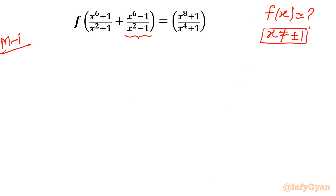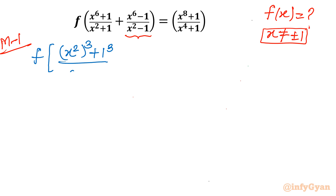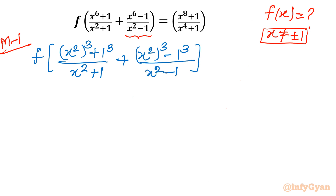Let us begin with the very first method, where I will simplify the left hand side first, then substitute our functional variable. So let me write x⁶ as (x²)³, and 1 as 1³. We are targeting the a³+b³ formula in the numerator for the first term. For the second term, x⁶-1 = (x²)³-1³ over x²-1. The right hand side is (x⁸+1)/(x⁴+1).